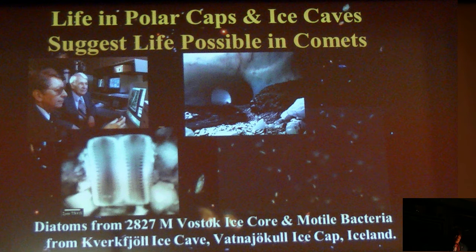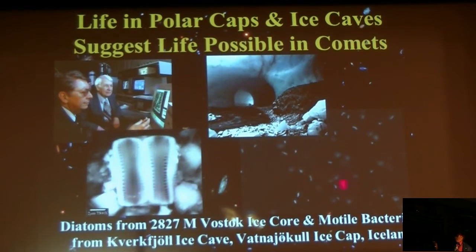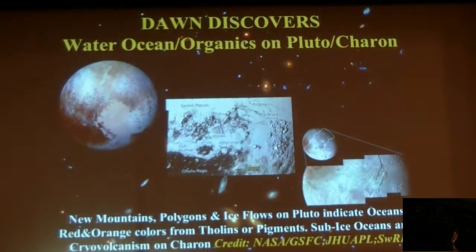Savita Bulat, who pioneered the study of microorganisms in the deep ice at Lake Vostok, came and visited me on a few occasions. This is an image of a diatom from 2,827 meters in the Vostok ice core and emotional bacteria from the ice cap in Iceland. Water and organics have recently been found on Uranus and Neptune and Neptune's moon Triton, and more recently there is a water ocean and organics on Pluto and Charon.